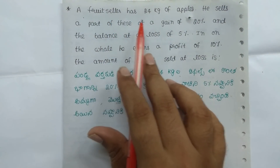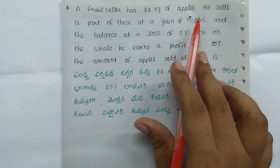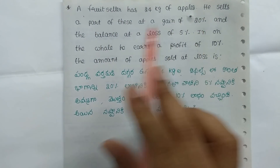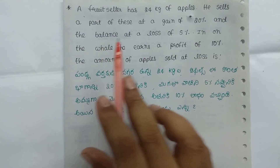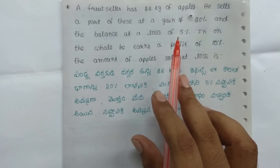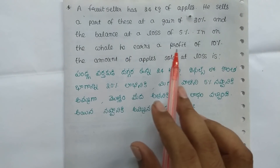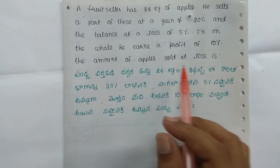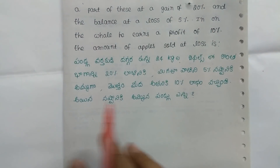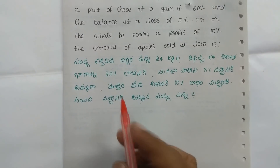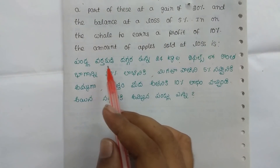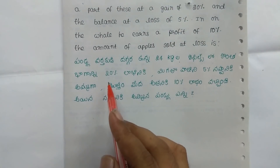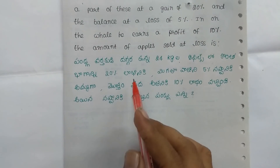He sells a part of apples at a gain of 20% and the balance at a loss of 5%. In all, he earns a profit of 10%. The amount of apples sold at a loss — so similar to this, I will tell you. The first thing is that there are 24 cases of apples.